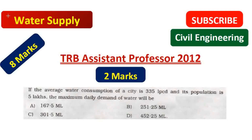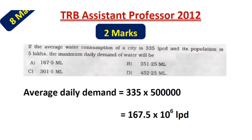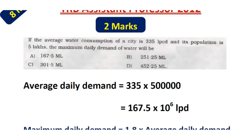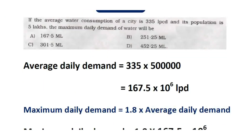We calculate the average daily demand by multiplying the variation factor 1.8 times the average daily demand. Average daily demand is equal to 335 litres per capita per day multiplied by 5 lakhs, that is equal to 167.5 × 10⁶ litres per day. So maximum daily demand is equal to 1.8 times the average daily demand.